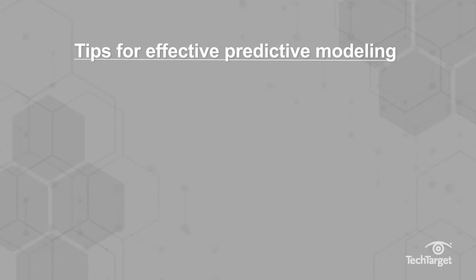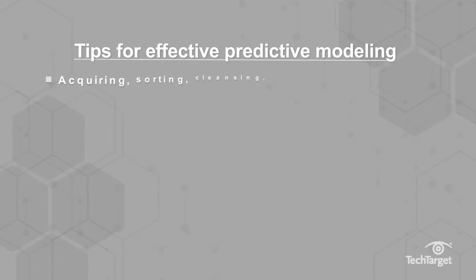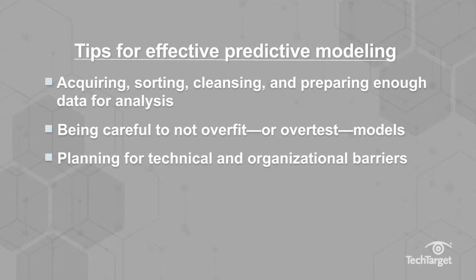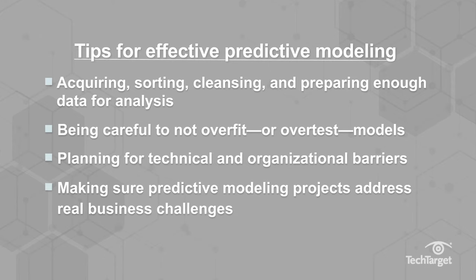While predictive modeling can aid in business decision-making processes, it must be used correctly. Some considerations for effective predictive modeling include acquiring, sorting, cleansing, and preparing enough data for analysis, which is often said to take about 80% of the process. Being careful not to overfit or over-test models, which can cause a model to just memorize points in a data set rather than generalize outcomes. Planning for technical and organizational barriers, like accessing useful data in decentralized systems, and making sure predictive modeling projects address real business challenges — keeping in mind that statistical significance does not always equal business insight.